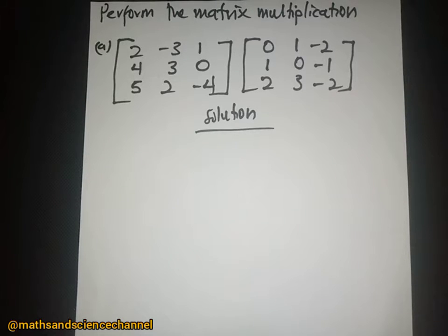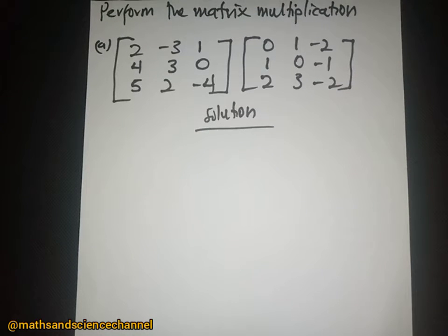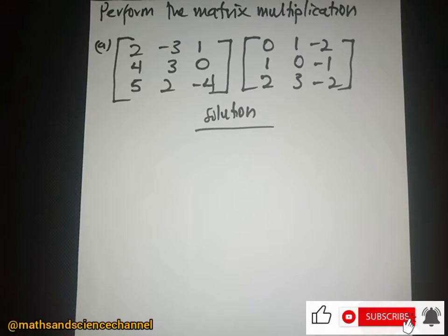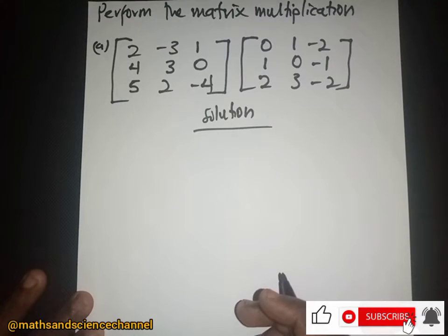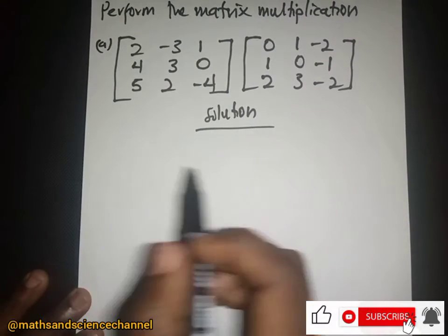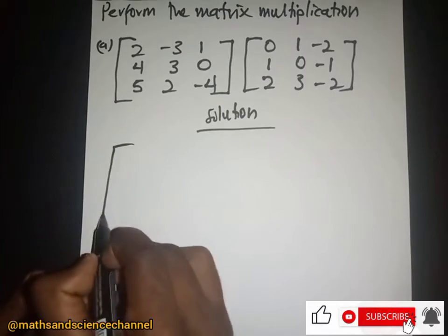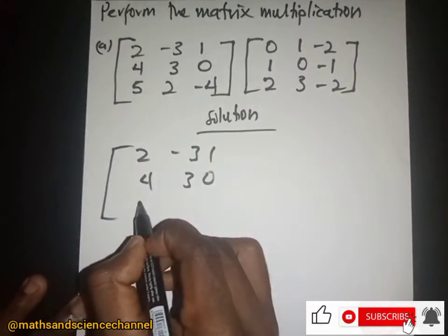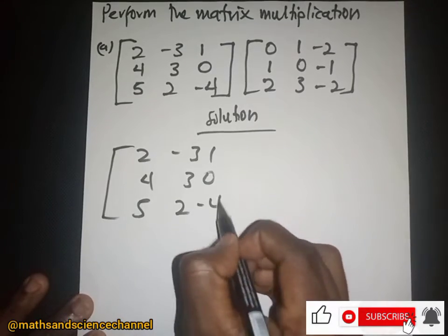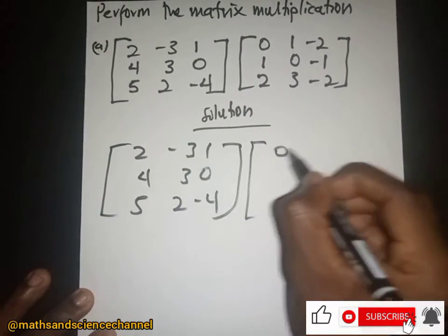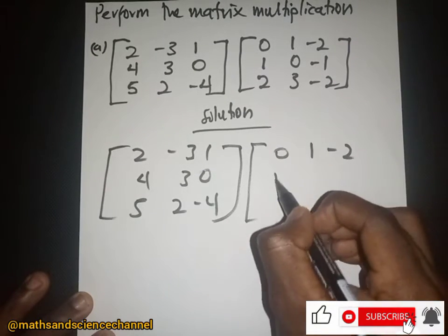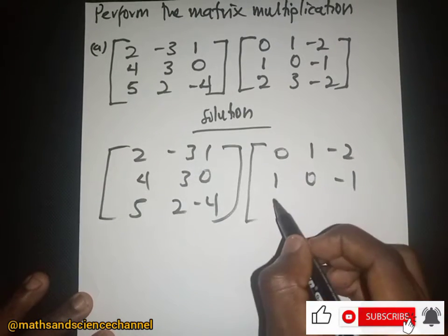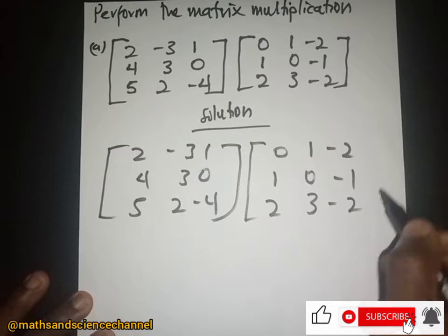Hello students, welcome once again. In this section we want to look at multiplication of a matrix — specifically a three by three matrix. So let's put them down here: we have 2 and then negative 4, multiplied by the matrix: 0, 1, negative 2; 1, 0, negative 1; then 2, 3, negative 2.